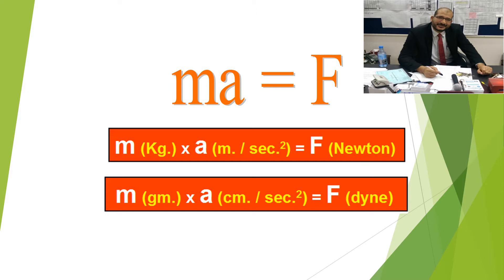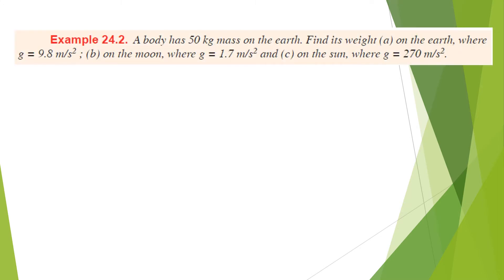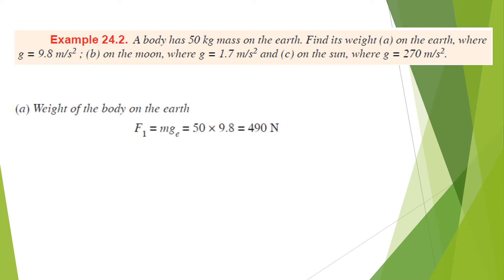First example: a body of 50 kg mass — find its weight on (a) the Earth, where g = 9.8 m/s²; (b) the Moon, where g = 1.7 m/s²; and (c) the Sun, where g = 270 m/s². Weight on Earth equals mass times acceleration: 50 × 9.8 = 490 Newtons.